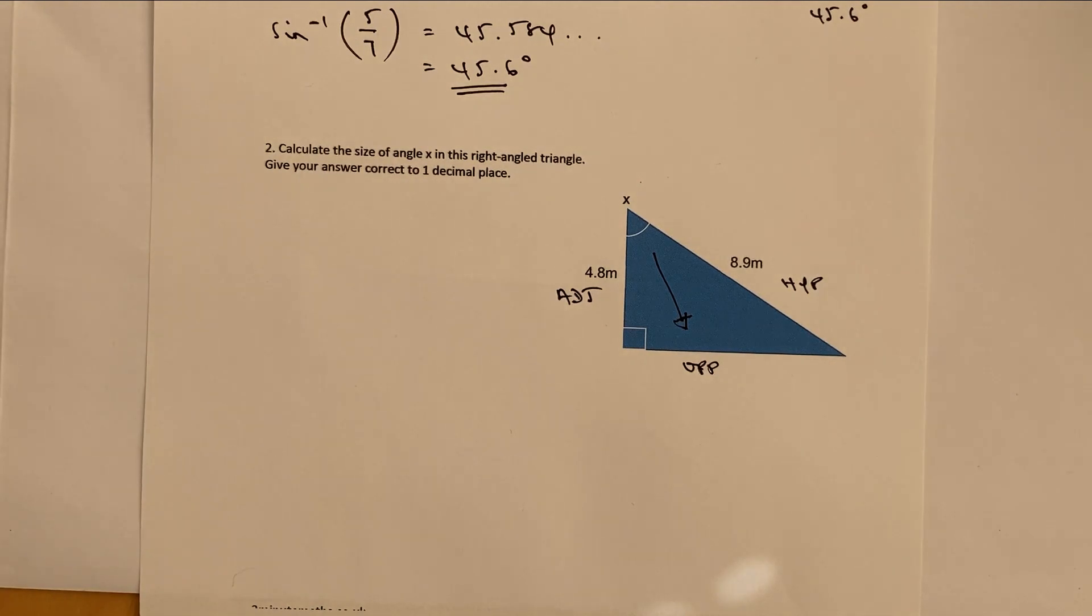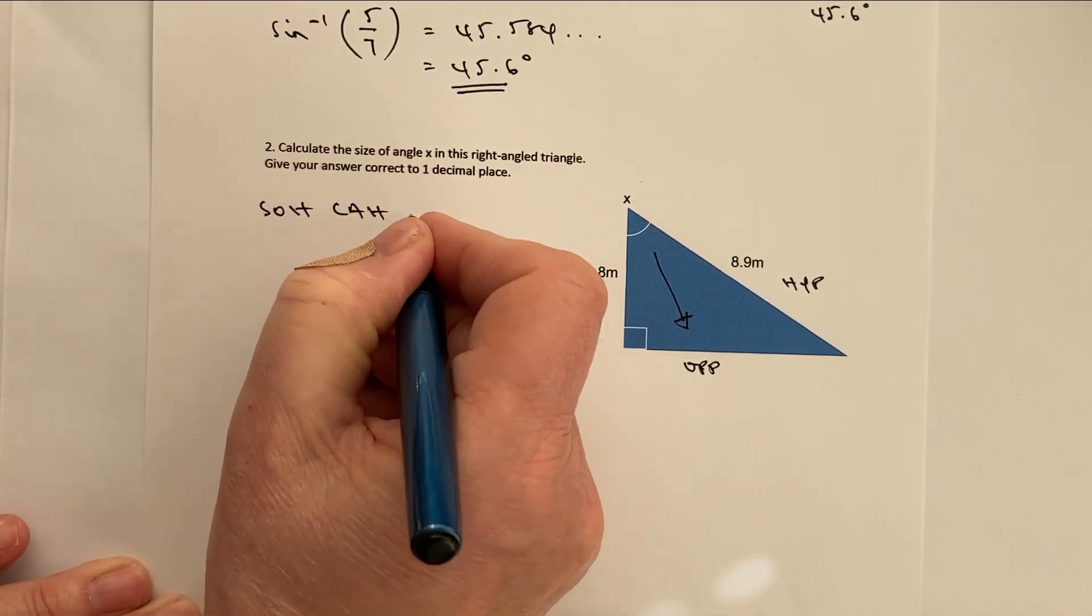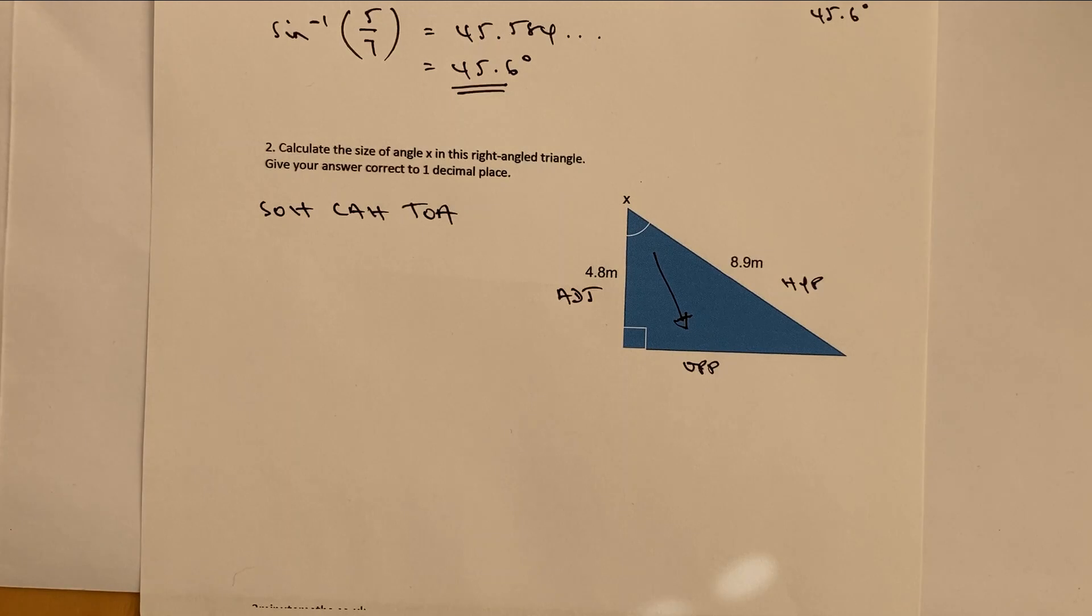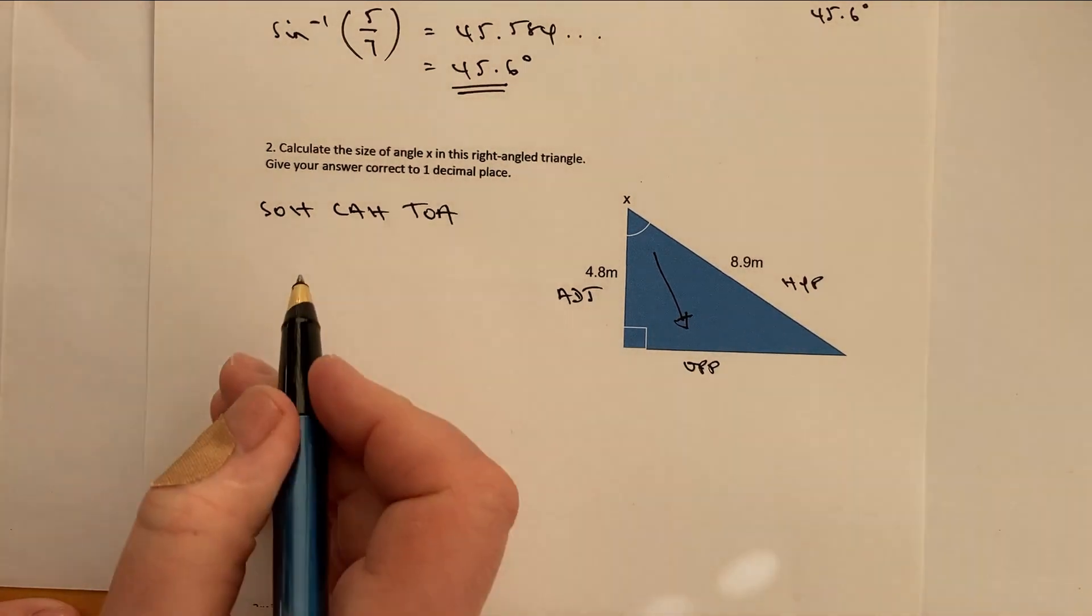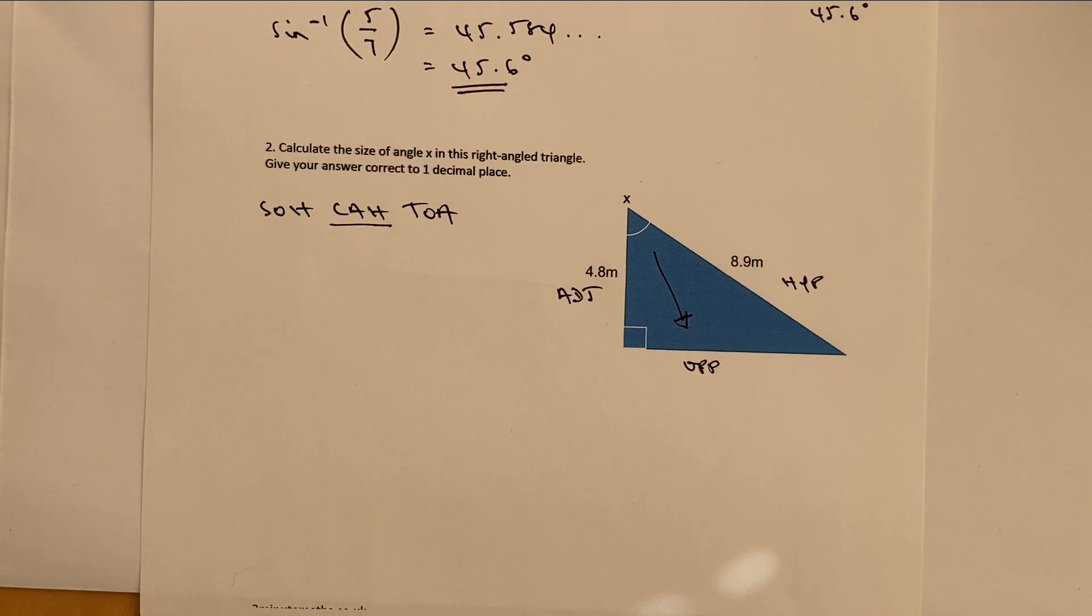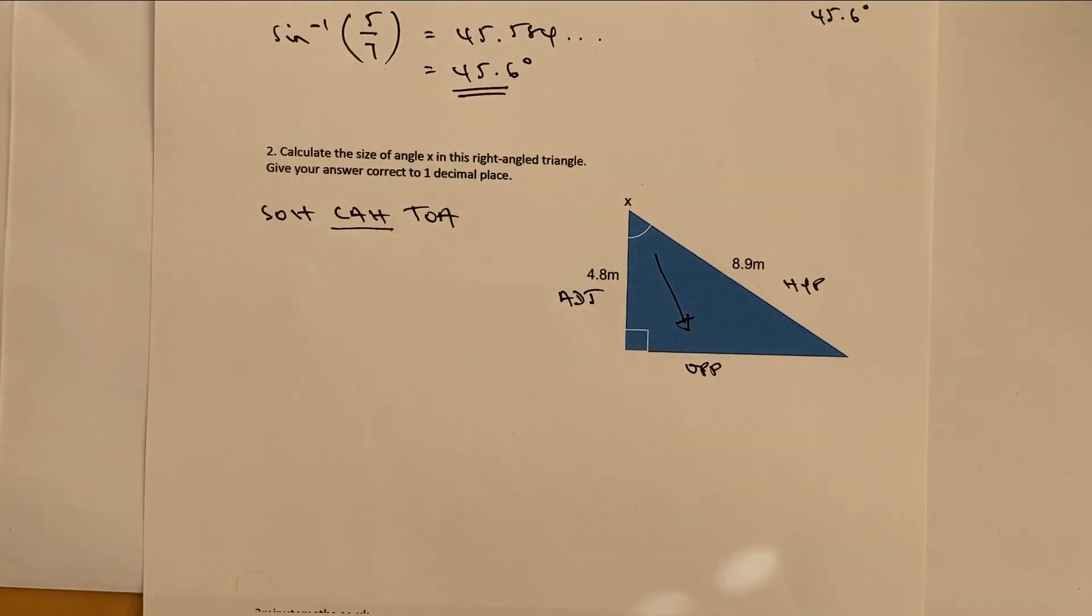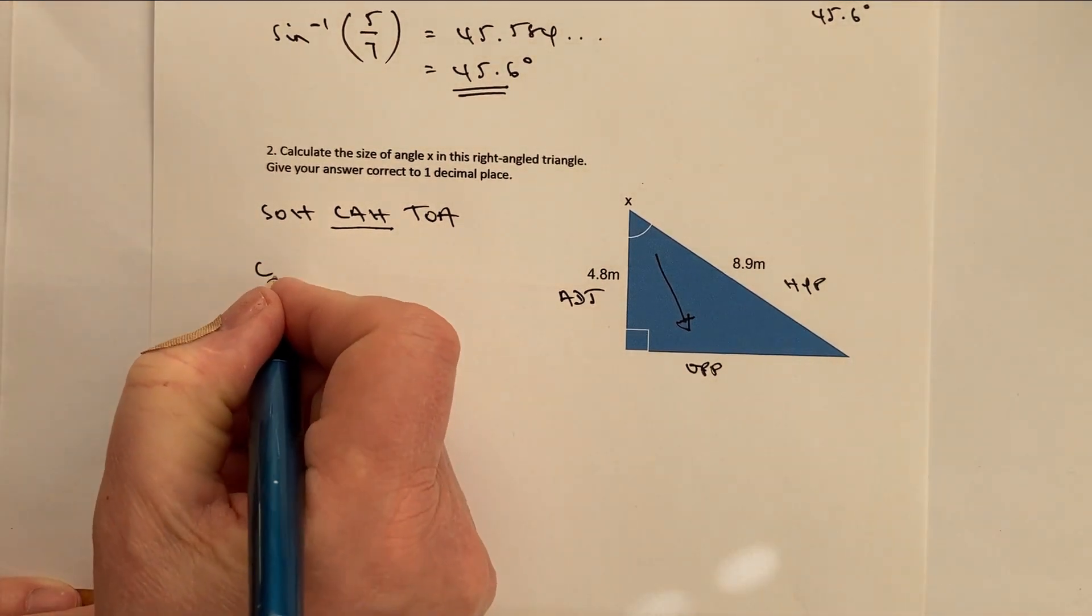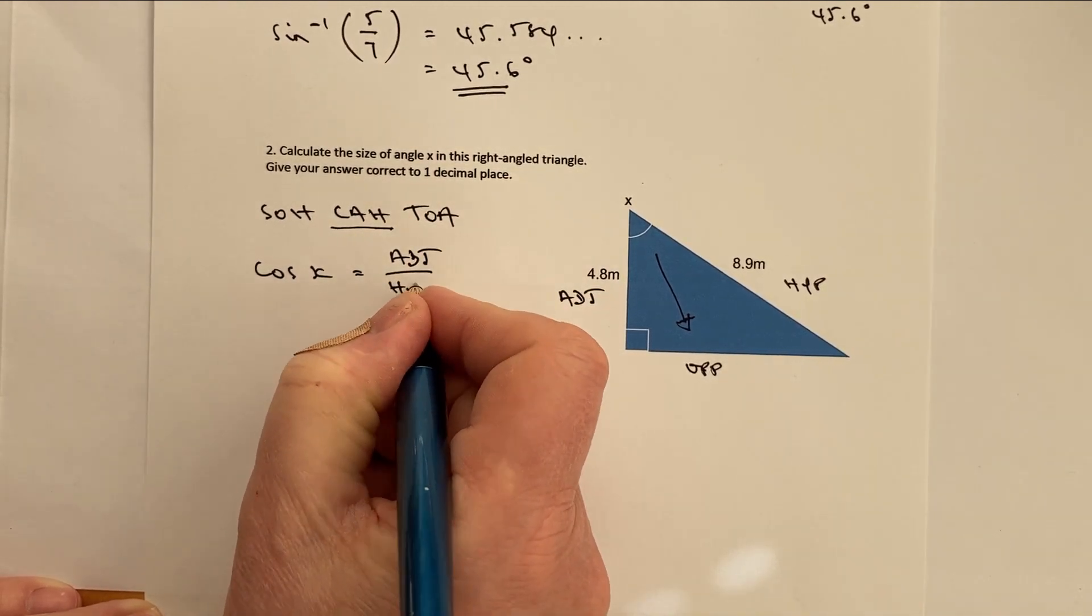So the next stages, I'm going to write the ratio. SOH CAH TOA. Now, I then need to decide which ratio I'm going to use. You'll notice that, actually, I've got the hypotenuse and the adjacent. Well, the hypotenuse and the adjacent would be the cosine, because that's the information I've got. Got the adjacent, got the hypotenuse, therefore adjacent and hypotenuse. If you remember, I need two out of the three things. So this is going to give me the cosine of x equals the adjacent divided by the hypotenuse.